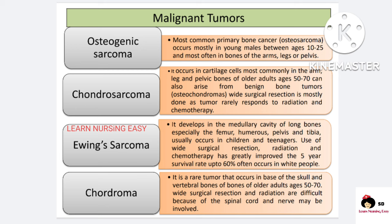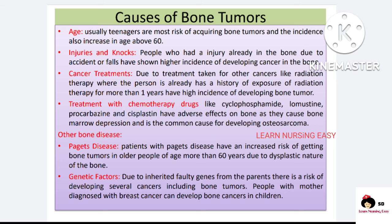Ewing's sarcoma occurs in the medullary cavity of the bone and is most commonly found in the femur, humerus, pelvis, and tibia. Chordoma is present in the base of the skull and the vertebral bone and is more common in older age, that is 50 to 70 years.